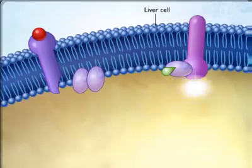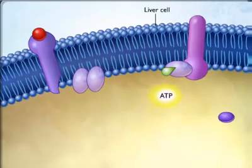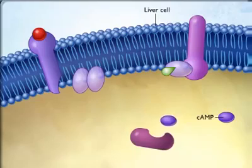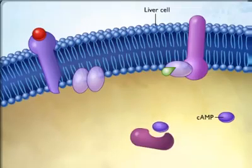When activated by the G protein subunit, adenylyl cyclase catalyzes the formation of cAMP from ATP. The cAMP formed at the inner surface of the membrane diffuses within the cytoplasm, where it binds to and activates protein kinase A.